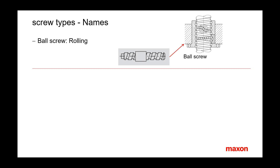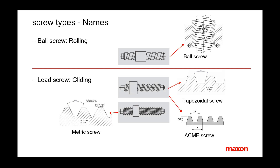There are two main screw types: ball screws and lead screws. Ball screws are characterized by rolling balls separating the nut and the screw. Lead screws are characterized by gliding friction between nut and screw. Lead screws can be divided into trapezoidal screws, also called ACME screws, and metric screws with standard threads. Trapezoidal screws can take up higher forces than metric ones and are used for larger systems, while small lead screws are typically made with metric threads.